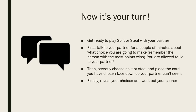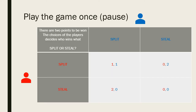Now it's your turn. Get ready to play Split or Steal with your partner. First, talk to your partner for a couple of minutes about what choice you're going to make. Remember, the person with the most points wins. You are allowed to lie to your partner. Then, secretly choose Split or Steal and place the card you have chosen face down so your partner can't see it. Finally, reveal your choices and work out your scores. Play the game once with your partner. Pause the video now.